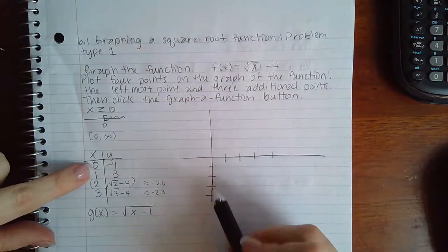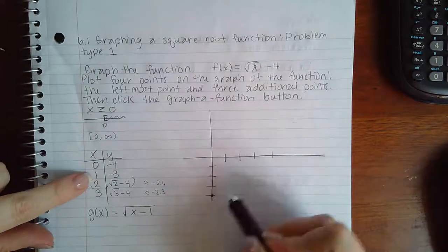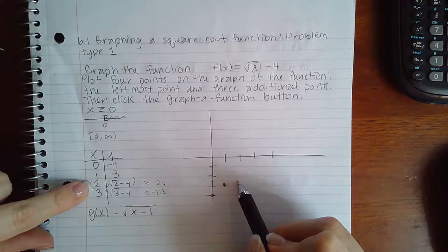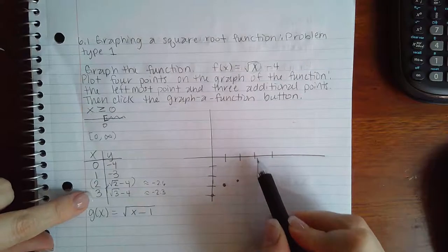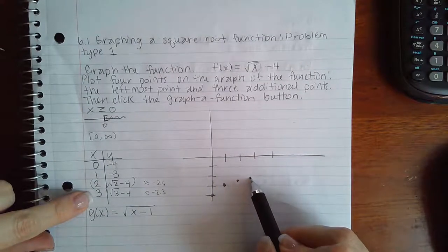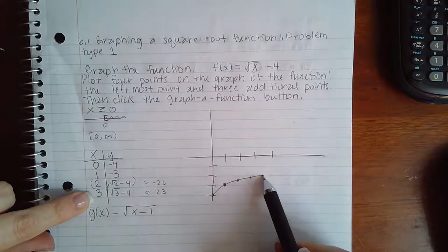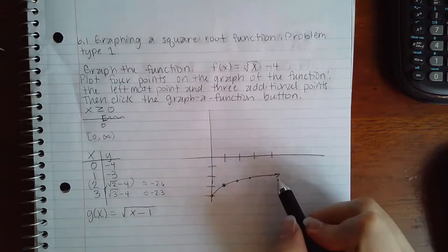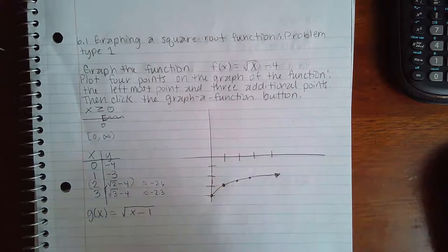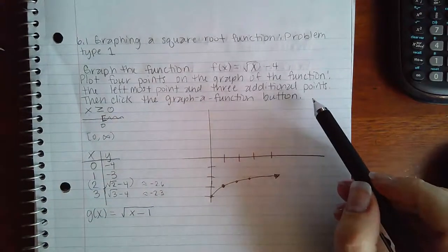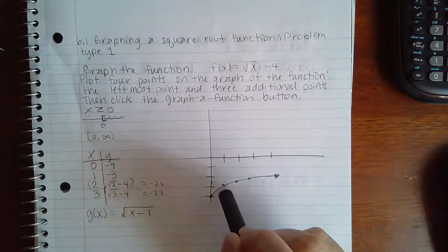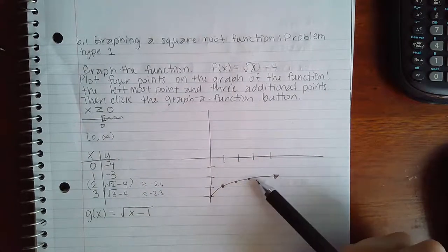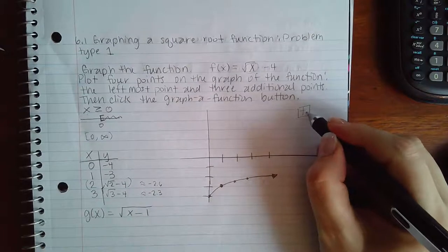When graphing on paper, I plot (0, -4), (1, -3), (2, -2.6) — about right there — and (3, -2.3) — about right there. You can see the curve taking shape. In the computer, you can grab the pencil and plot (0, -4) and (1, -3) easily. For the non-integer points, you'll need to click the button that has a little x on it, which opens up a coordinate input for you.